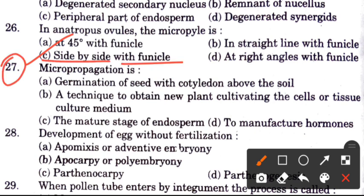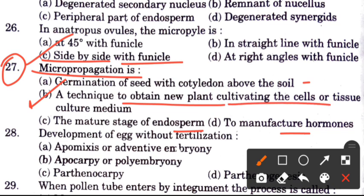Question 27: What is micropropagation? Options are: germination of seed with cotyledon above the soil, a technique to obtain new plants by cultivating cells or tissues in a culture medium, or using endosperm tissue to manufacture hormones. The answer is B: a technique to obtain new plants by cultivating cells or tissues in a culture medium.